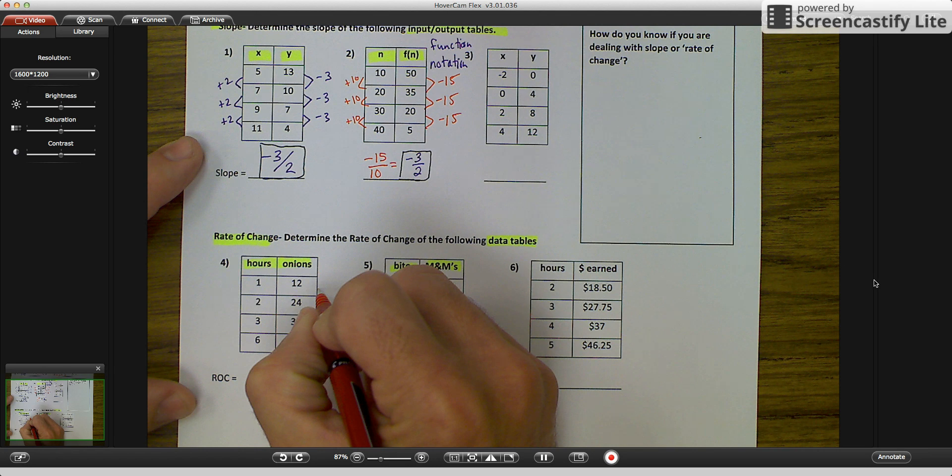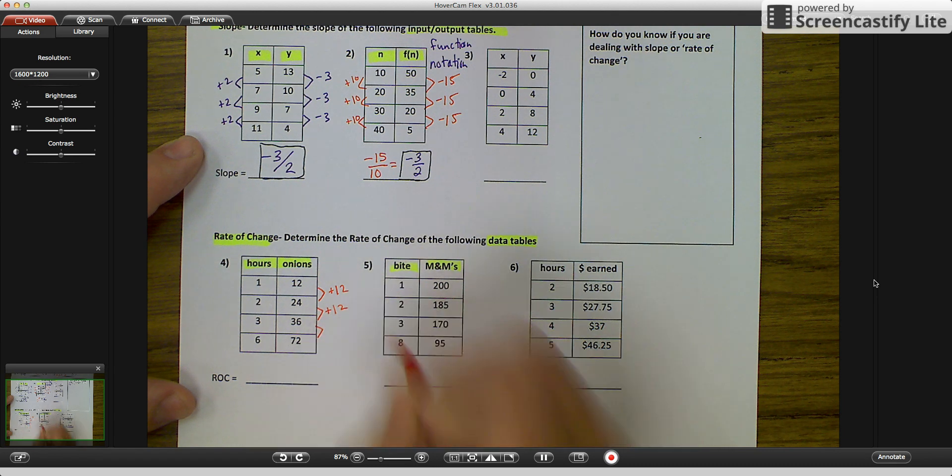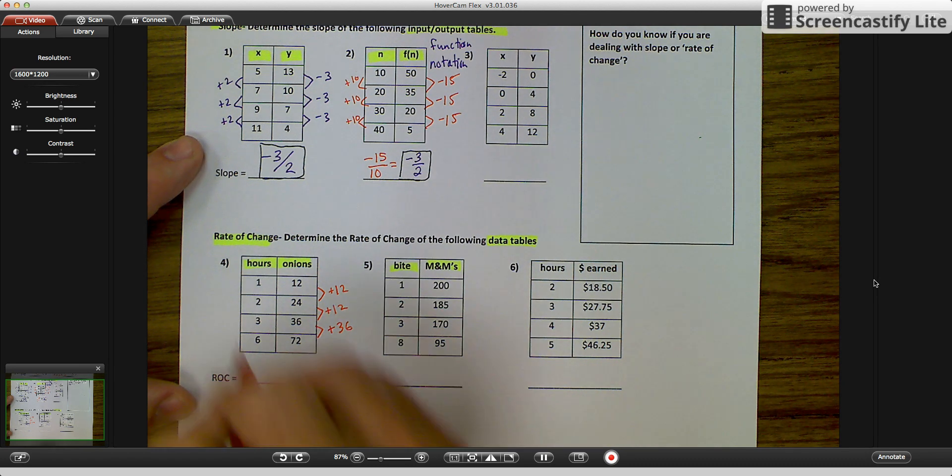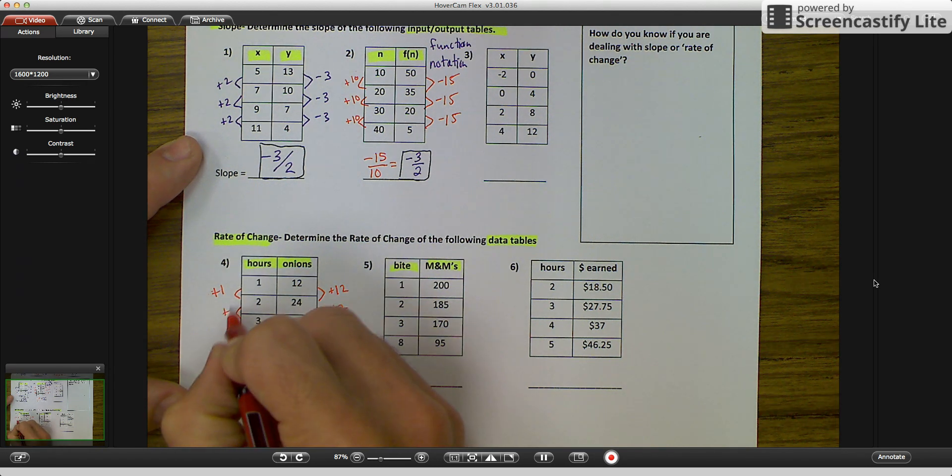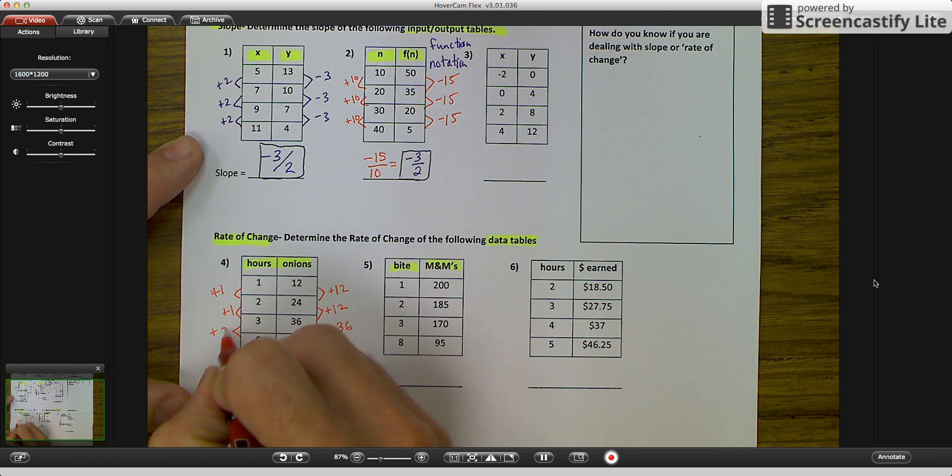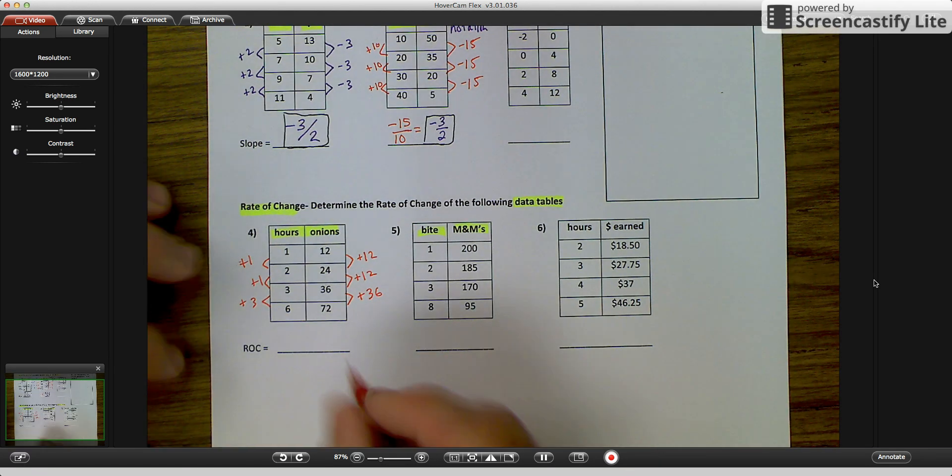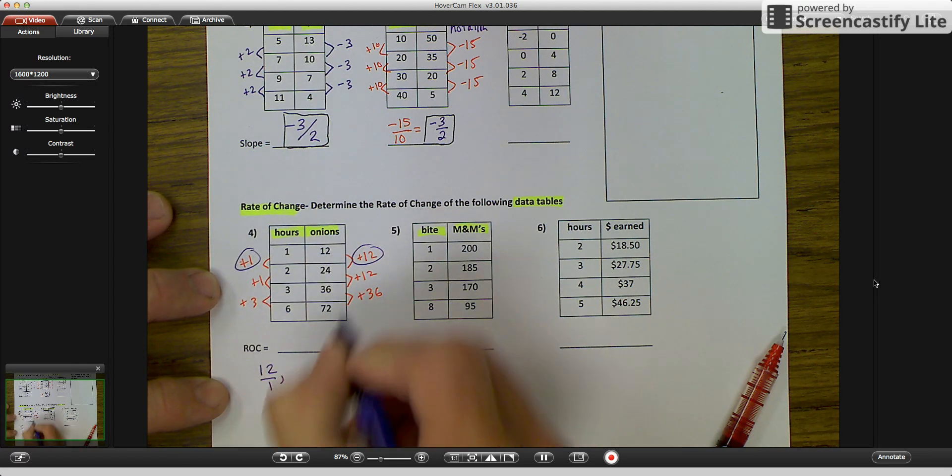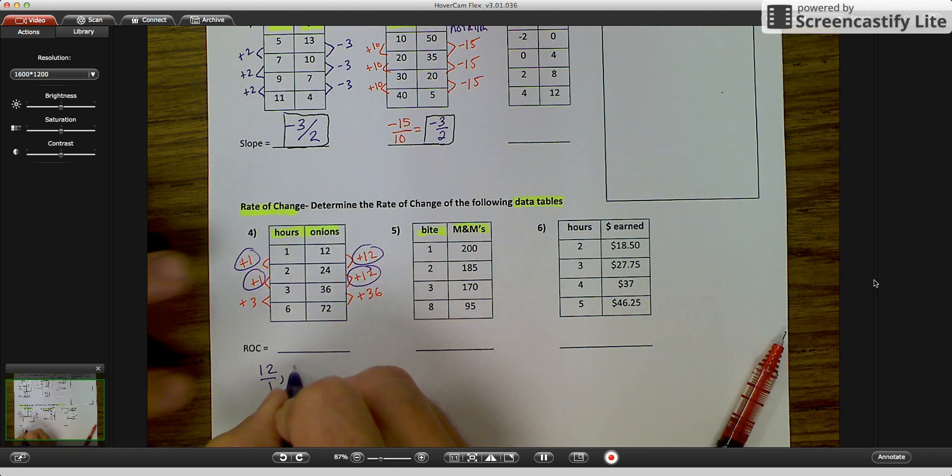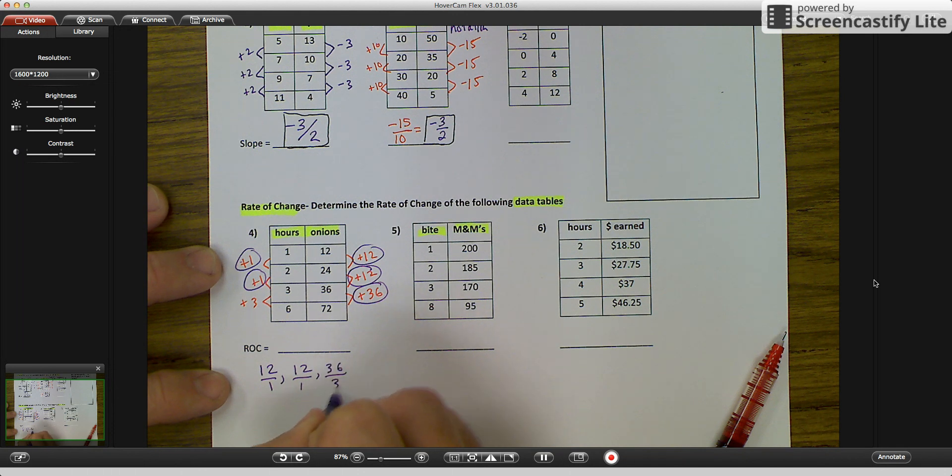So let's continue with what we were doing above. So my rate of change in my y's from 12 to 24 would be plus 12. 24 to 36 plus 12. And then 36 to 72, ooh, that's not plus 12, that's plus 36. But let's continue and see what we get. For my hours, plus 1 to 2 is plus 1, 2 to 3 would be plus 1, and then 3 to 6 is plus 3. Okay, that doesn't match either. So what I need to do, what you're going to need to do is to come down here and say, alright, my first value is 12 over 1. My second rate of change was 12 over 1, again, they match.